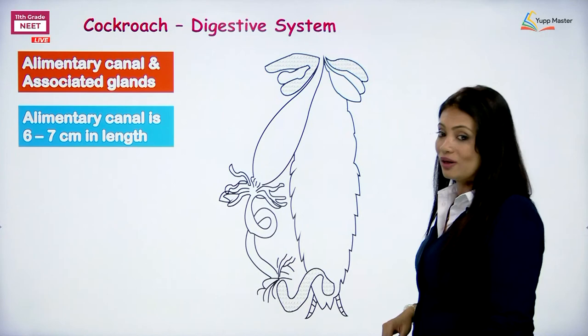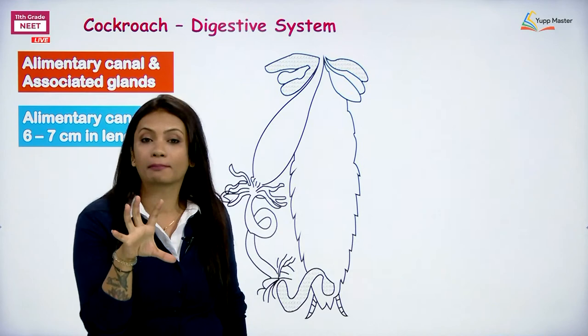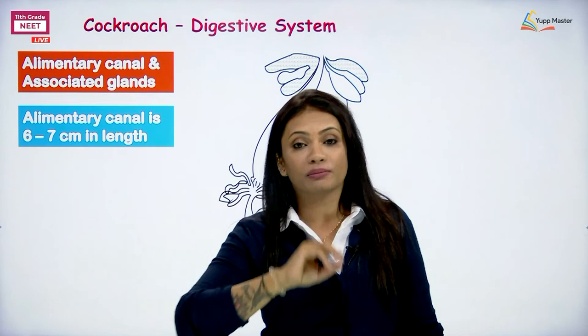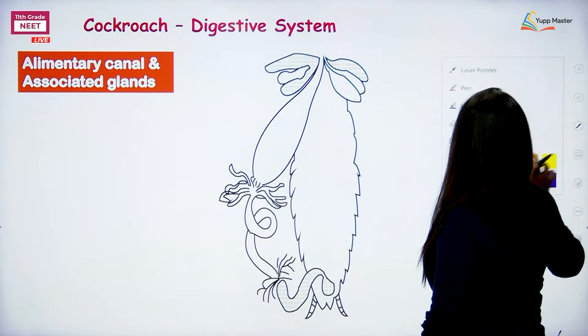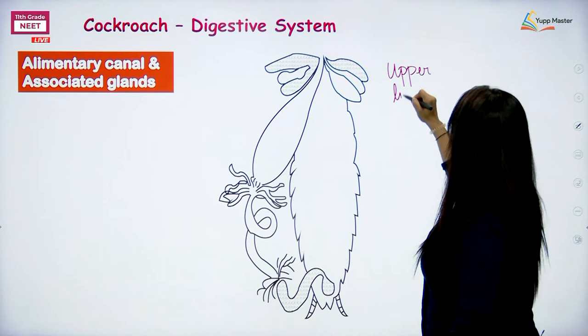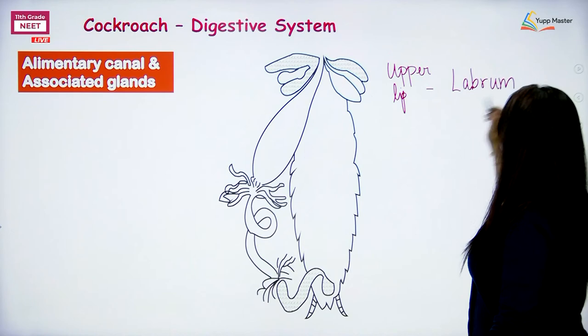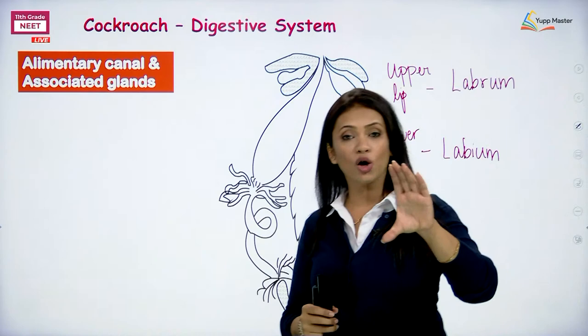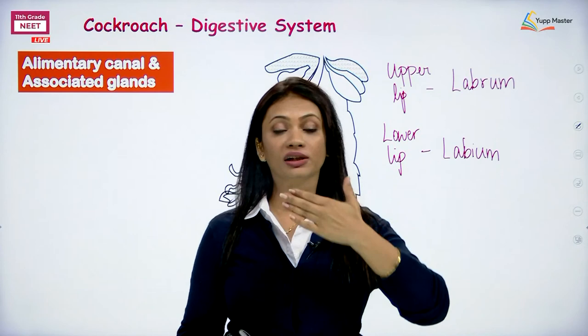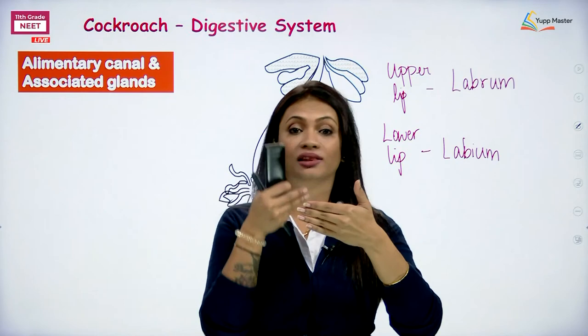When the cockroach takes food into the mouth, it opens its lips. The upper lip is called the labrum and the lower lip is called the labium. When these lips open, they first open into a small space before the oral cavity — a cavity between the lips and the jaws of the cockroach, which is called the pre-oral cavity.